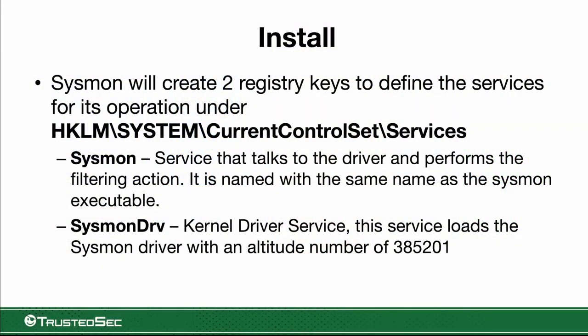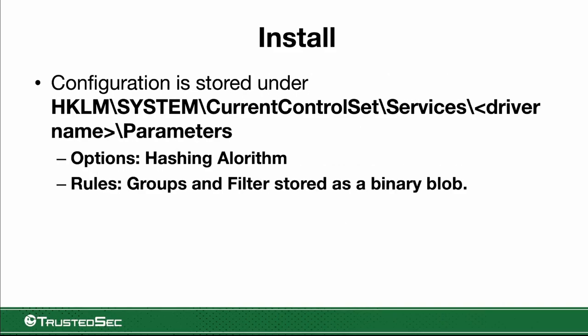The information is saved inside the registry itself. Everything goes into HKLM\System\CurrentControlSet\Services — we'll have Sysmon and Sysmon driver entries. Sysmon is the service itself, and Sysmon driver specifies the altitude number and holds the configuration. Under the parameters key, we have the hashing algorithms that have been set, and if we specify rules, we'll find those groups and filters as a binary blob under 'rules'.